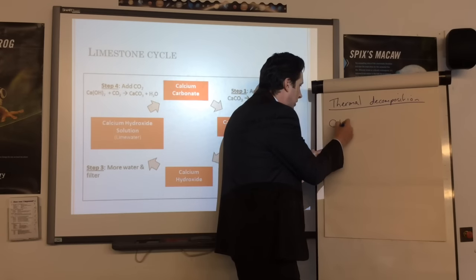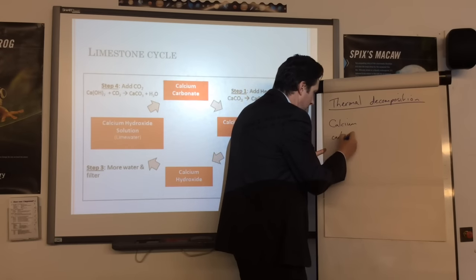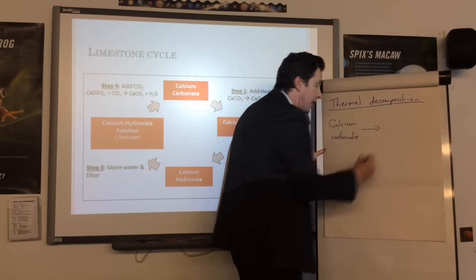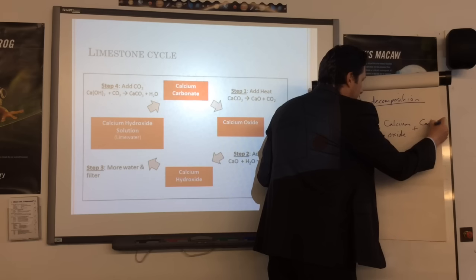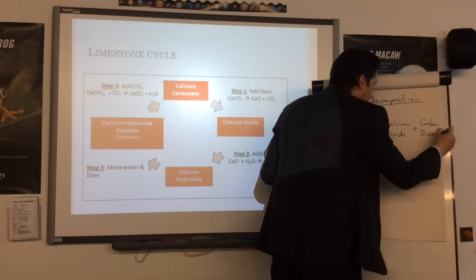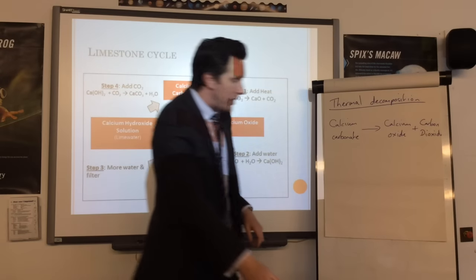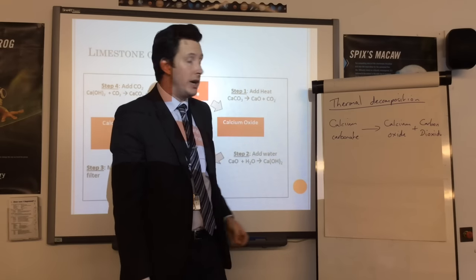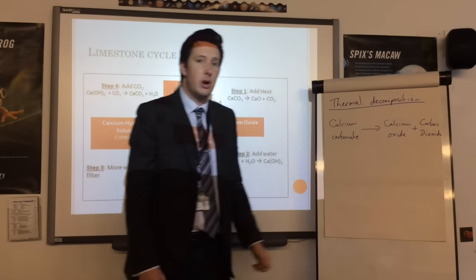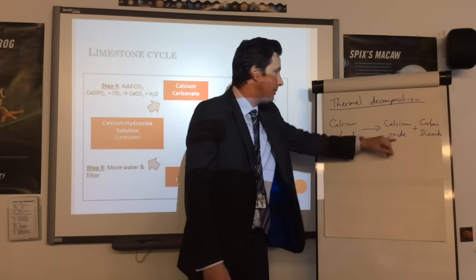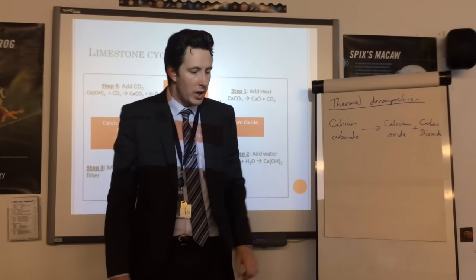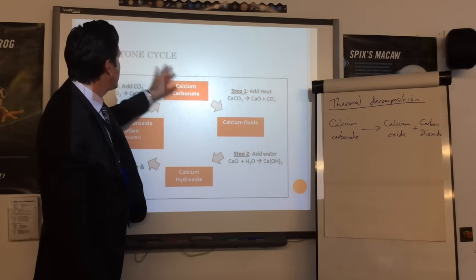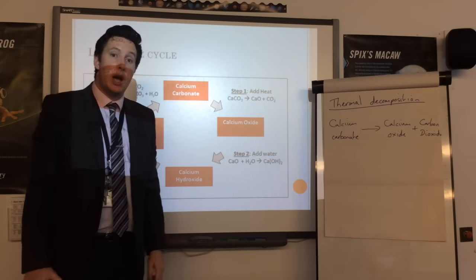The thermal decomposition reaction is: calcium carbonate heated to a very high temperature produces calcium oxide and carbon dioxide. This could apply to any metal carbonate - zinc carbonate makes zinc oxide and carbon dioxide, magnesium carbonate makes magnesium oxide and carbon dioxide. They always produce carbon dioxide, but the metal at the start changes.